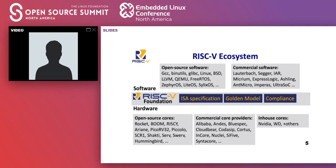There are both open source implementations and commercial implementations of RISC-V. Rocket and Boom are some of the original RISC-V designs from Berkeley. Riscy and Ariane are designs from the PULP team at ETH Zurich, and both are being used to build upon for open source and vendor implementations. Western Digital has the SweRV core, meant for microcontroller-type applications.